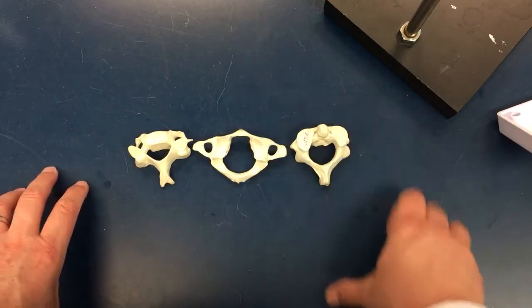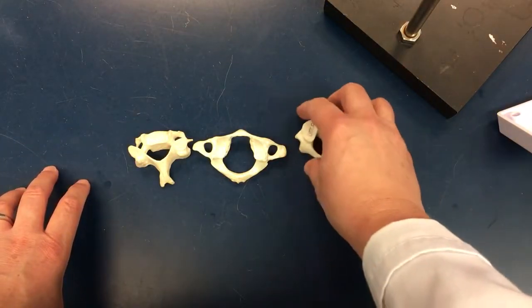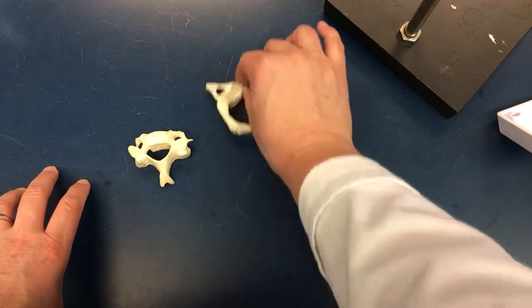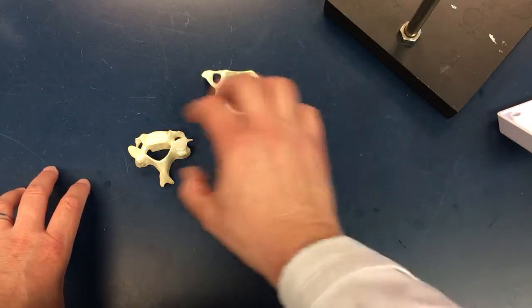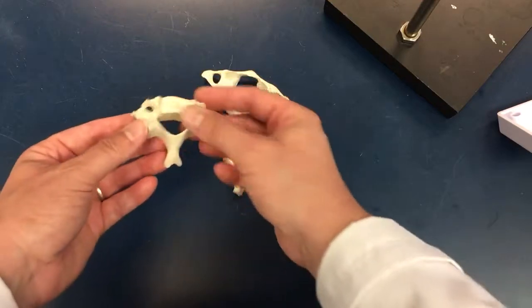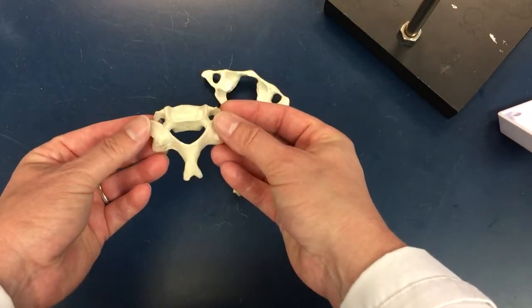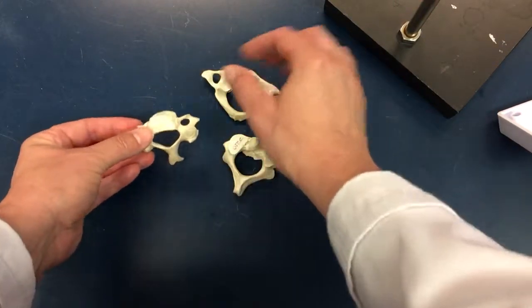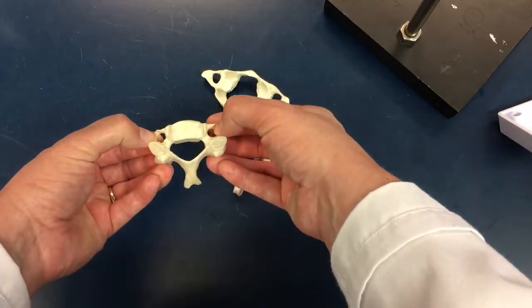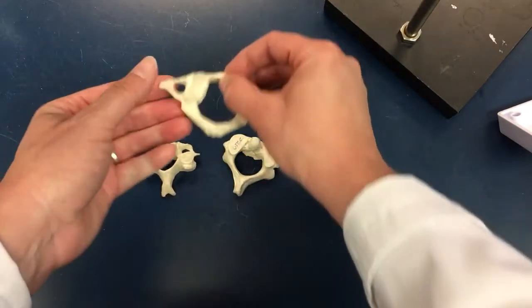The one thing about the cervical vertebrae is that you need to know the C1 and the C2, but you also have to be able to identify just a regular generic cervical vertebrae. We do that first by noting these transverse foramen that are only found in cervical vertebrae.